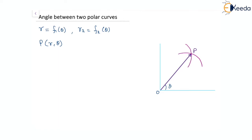We already know that when you are trying to find the angle of intersection between any two curves, it should be the angle between the tangents also. So if we draw the tangent to both the curves — let's say this is the first curve with tangent T1, and the second curve with tangent T2 — the angle between the radius vector and the tangent, let's say for the first case this is phi1, and for the second case this is phi2, at the point P.